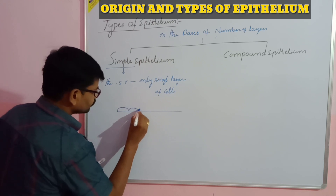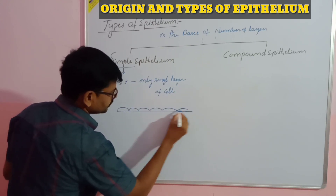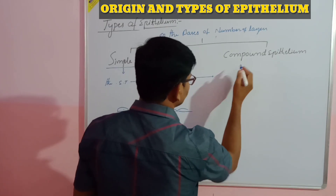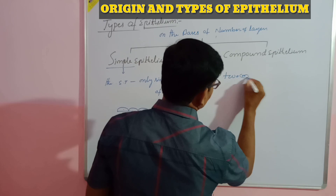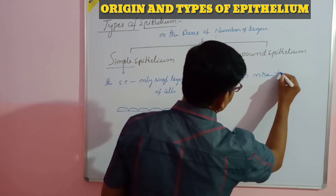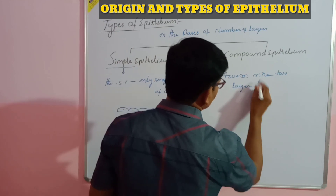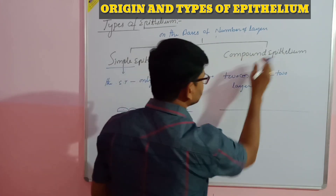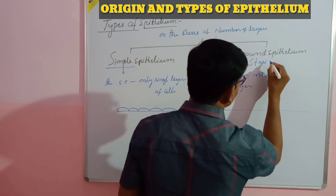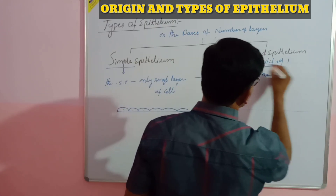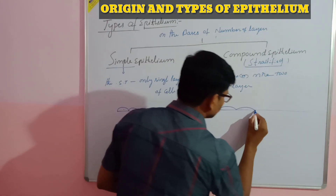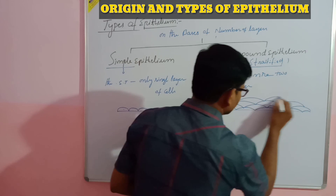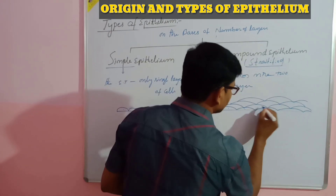In simple epithelium, on the basement membrane, the number of layers is single. In compound epithelium, the epithelial tissue is made up of two or more than two layers. So epithelial tissue made up of two or more layers is called compound or stratified epithelium — 'strata' meaning layers: first layer, second layer, third layer, fourth layer, and so on.